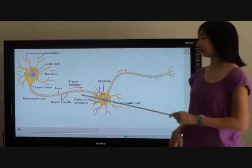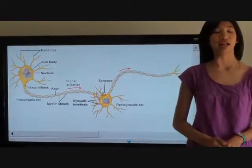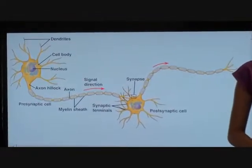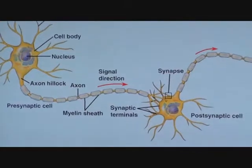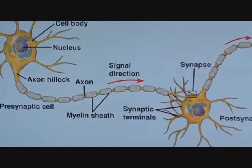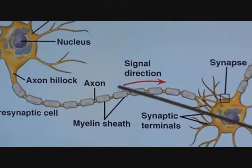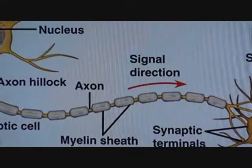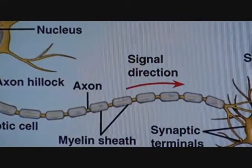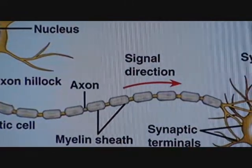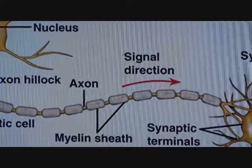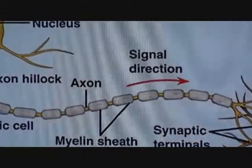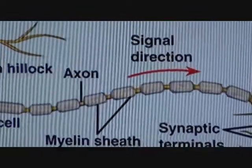This is the axon. The axon transmits the electrical signals away from the cell body. These are the Schwann cells. The Schwann cells make up the myelin sheath, which helps insulate the axon, thus making transmitting an electrical signal a lot easier.